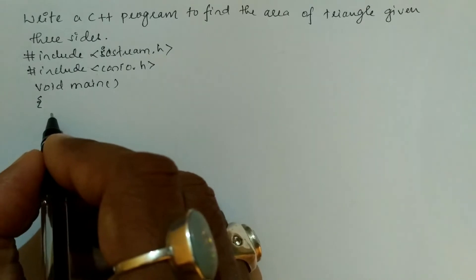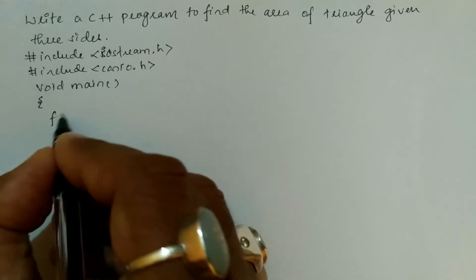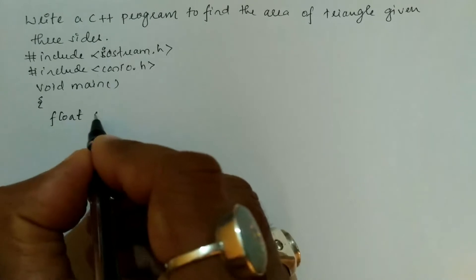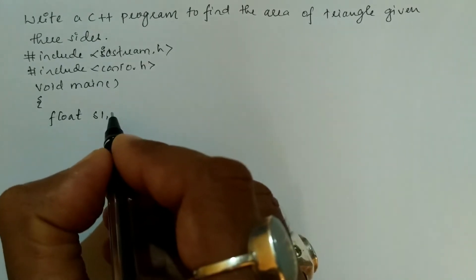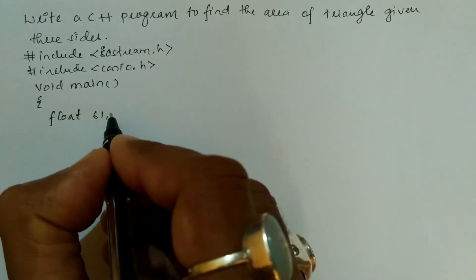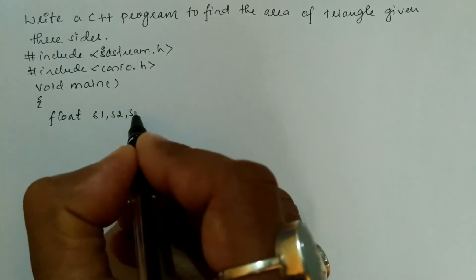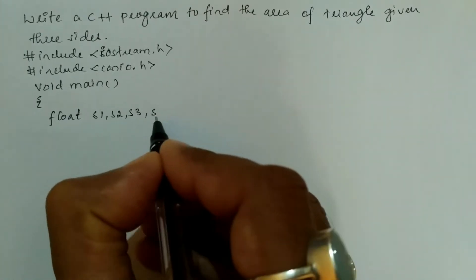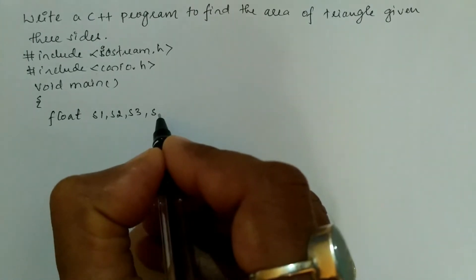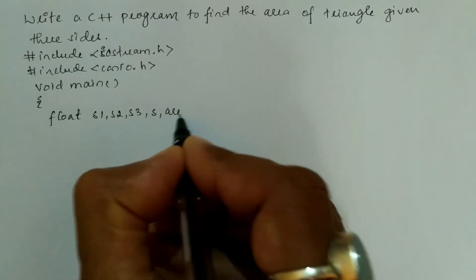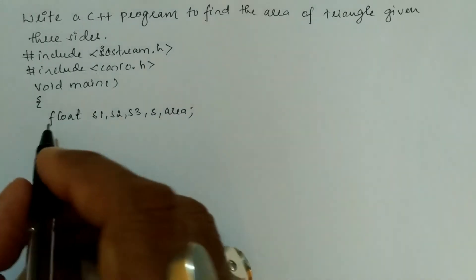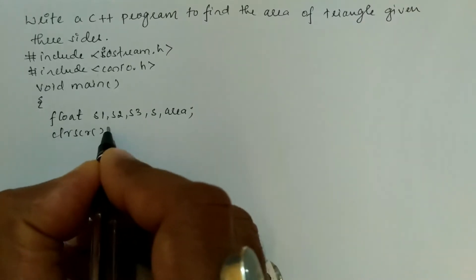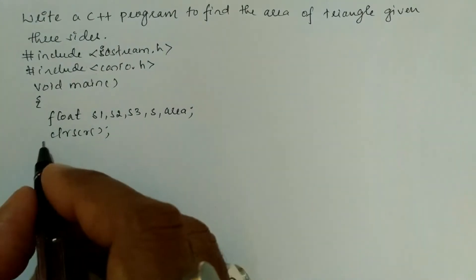Now we are going to declare the variables with data type float: s1 represents side one, s2 represents side two, s3 represents side three of the triangle, and then one more variable called s, and the next variable called area, followed by a semicolon. Then we write the clrscr() function, which is used to clear the screen.